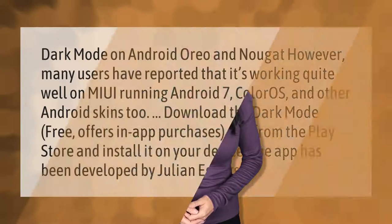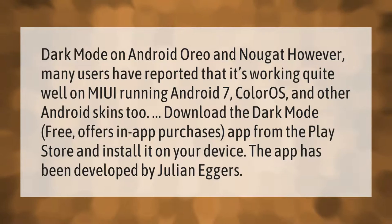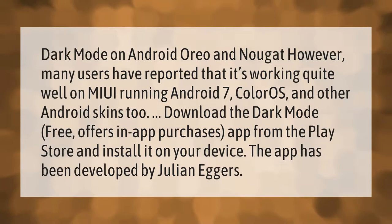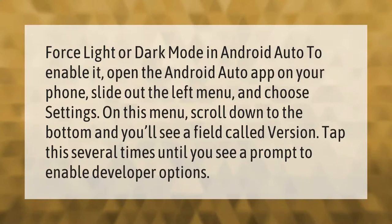Dark mode on Android Oreo and Nougat: many users have reported that it's working quite well on MIUI running Android 7, Color OS, and other Android skins. To use dark mode, download the 'Dark Mode Free' app (with in-app purchases) from the Play Store and install it on your device. The app has been developed by Julian Eggers.